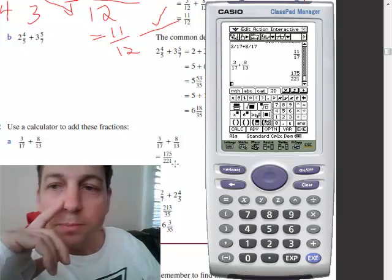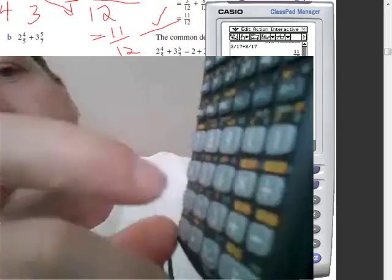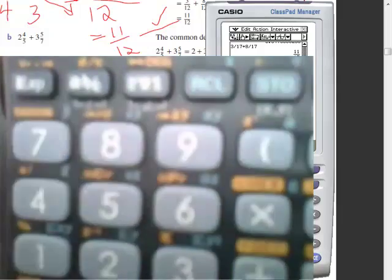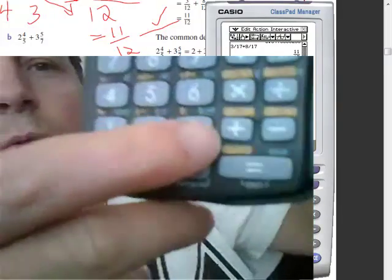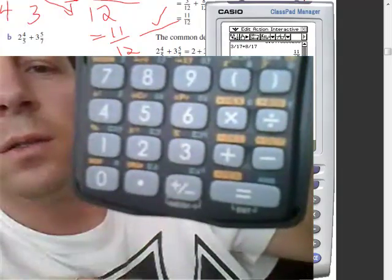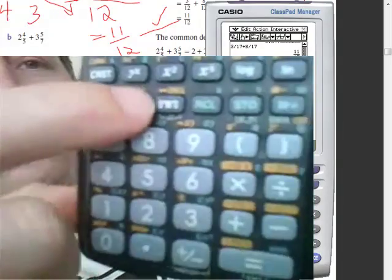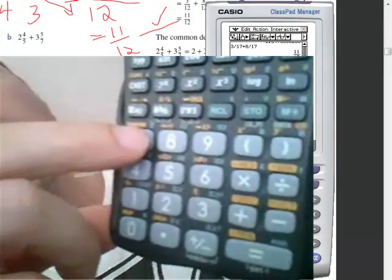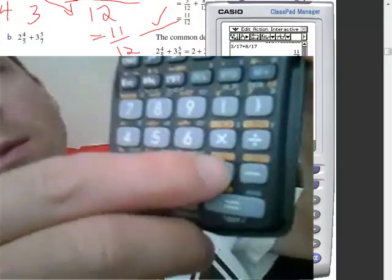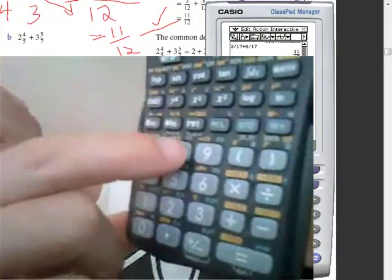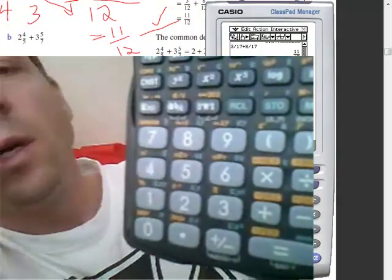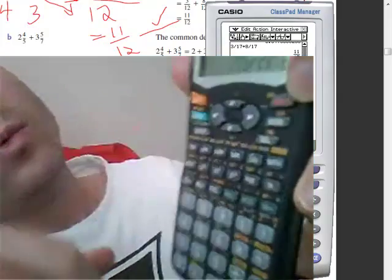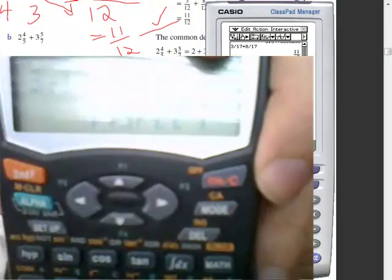I'll show you very quickly. We use the ABC button here, so we can push 3 ABC, which is the line. So 3 over 17 plus 8 ABC, which is your over button, 8 over 13 equals 175 over 221.